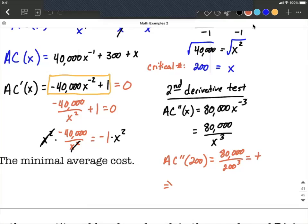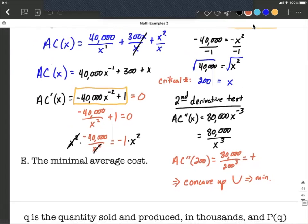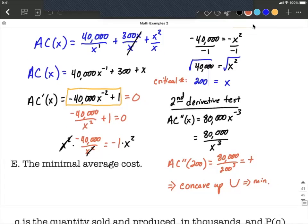What that tells us is when the second derivative is positive that tells us about concavity, and this one is going to be concave up because it was an overall positive result coming out. Concave up is going to have this sort of shape and that implies that we have a minimum value at an x value of 200.